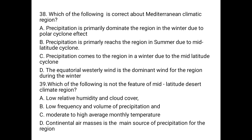The Mediterranean climate is known for having moist wind during the winter, so precipitation primarily dominates the region in winter. Option A says precipitation is due to polar cyclone — no. Option B says precipitation is primarily in summer due to mid-latitude cyclone — no, not in summer. Option C says precipitation comes to the region in winter due to the mid-latitude cyclone — yes, the answer is C.